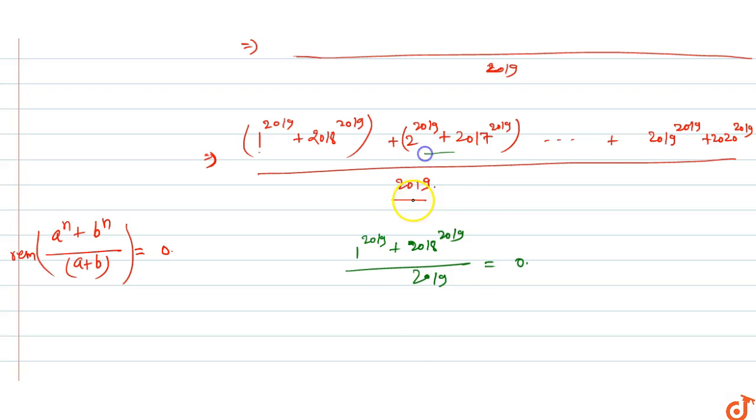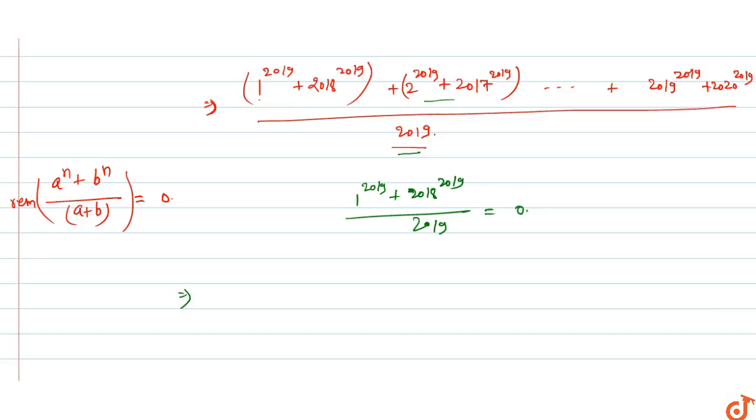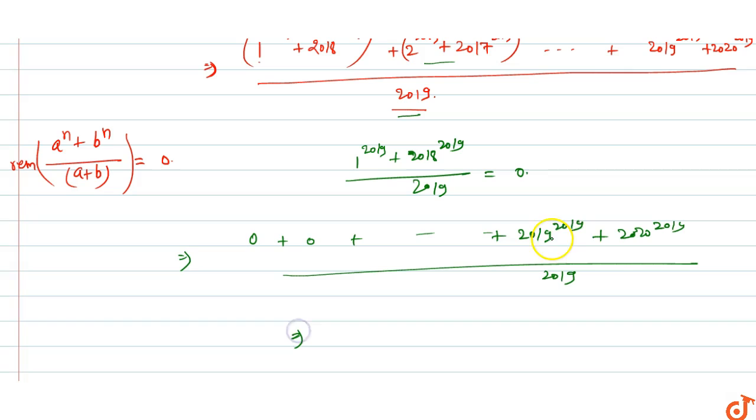Similarly, all pairs give remainder 0. So we get zero plus zero plus zero up to the last terms, which are 2019 raised to power 2019 plus 2020 raised to power 2019 divided by 2019. The value of all these pairs is zero, leaving only 2020 raised to power 2019.